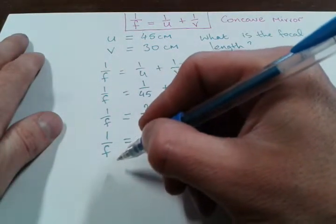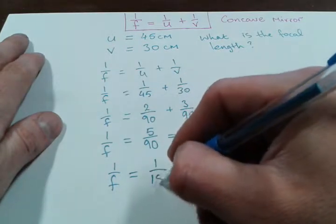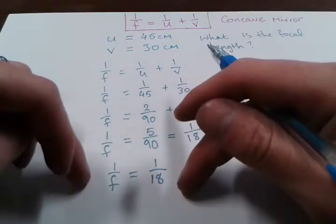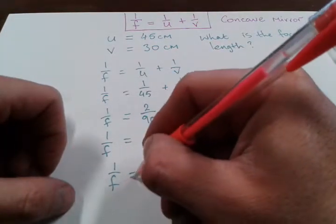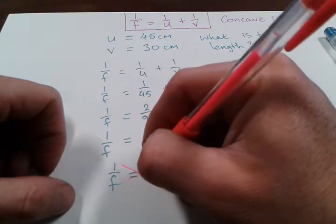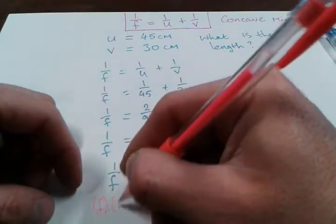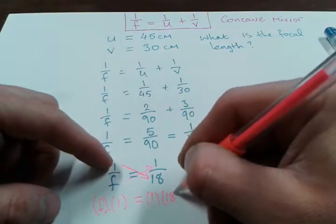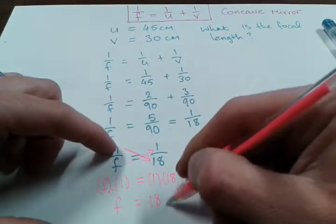So what do we end up with as our answer? 1 over F equals 1 over 18. I need to get F on its own. You could consider cross multiplication: F by 1 and 1 by 18, which would give you F equals 18 centimeters.